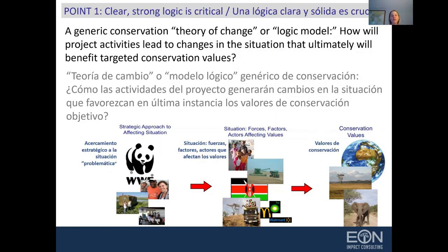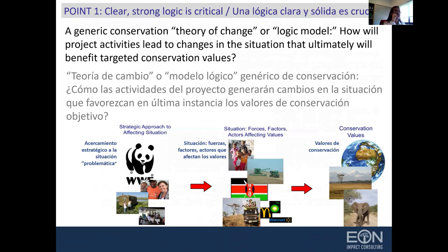When we articulate our theory of change, ultimately we need to explain what we want to do, how that will change behavior, thinking, and knowledge, in order to benefit those ultimate conservation values. Y eso es lo que hay que tener en mente cuando se produce esta teoría de cambio o modelo lógico: ¿qué conceptos, conocimientos y comportamientos vamos a cambiar para que estos valores se vean afectados de la manera en que nosotros buscamos?